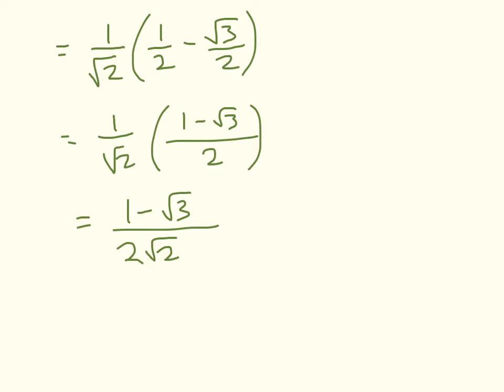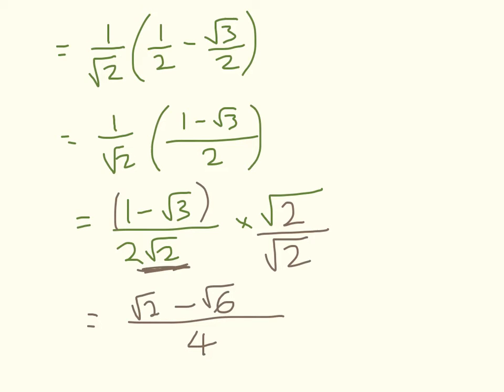It's not considered elegant to leave the square root in the denominator. So we want to do something called rationalizing the denominator, and we can do that by making it into a rational number instead of an irrational. If we multiply top and bottom by √2, what we get on the denominator is 4, and in the numerator we have √2 - √6. So that's probably the nicest way to write that solution.